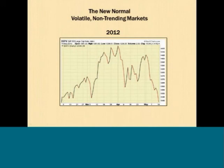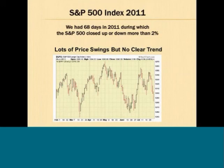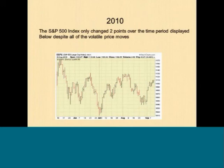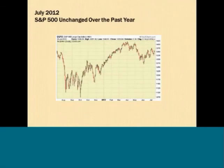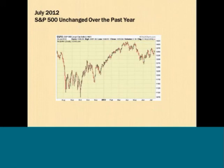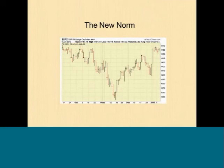Here's a snapshot from 2012 — a lot of price volatility, but the index virtually unchanged. Here's another example from 2011: lots of price swings, very little trend, the index virtually unchanged. Here's 2010, same type of scenario. The S&P in 2011 was actually unchanged for the year — started at 1257, ended at 1257. A snapshot from July 2012 over the previous 12 months shows a lot of price volatility. A more recent snapshot of the S&P shows more price volatility with no strong trend and the index virtually unchanged.